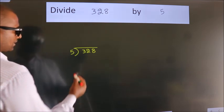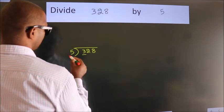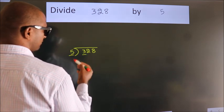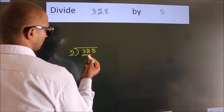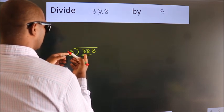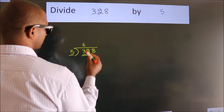Next, here we have 3, here 5. 3 is smaller than 5, so we should take 2 numbers: 32. A number close to 32 in the 5 table is 5 times 6, which is 30.